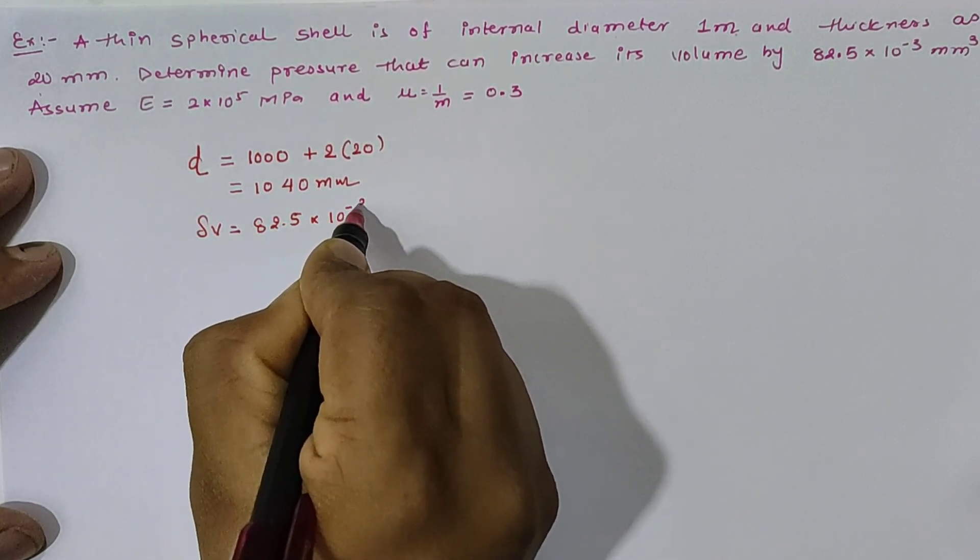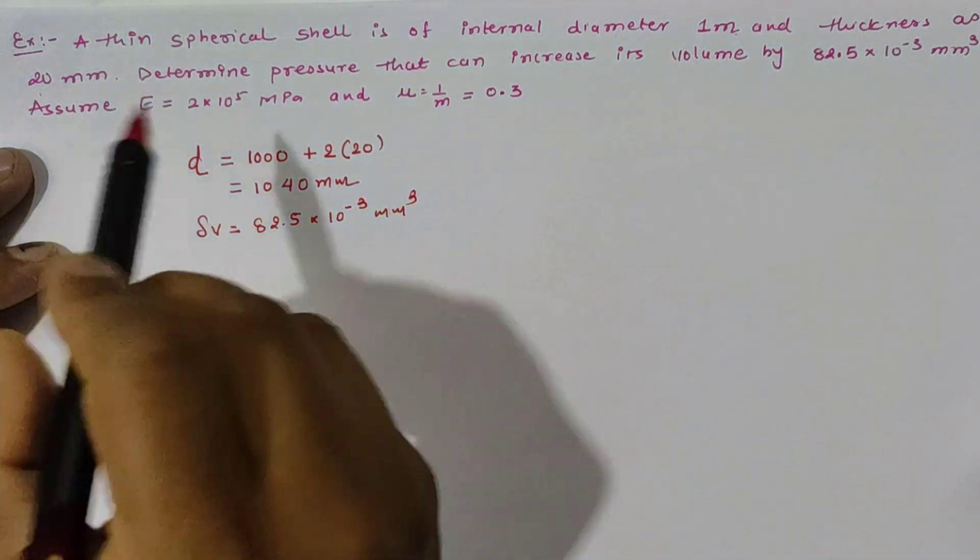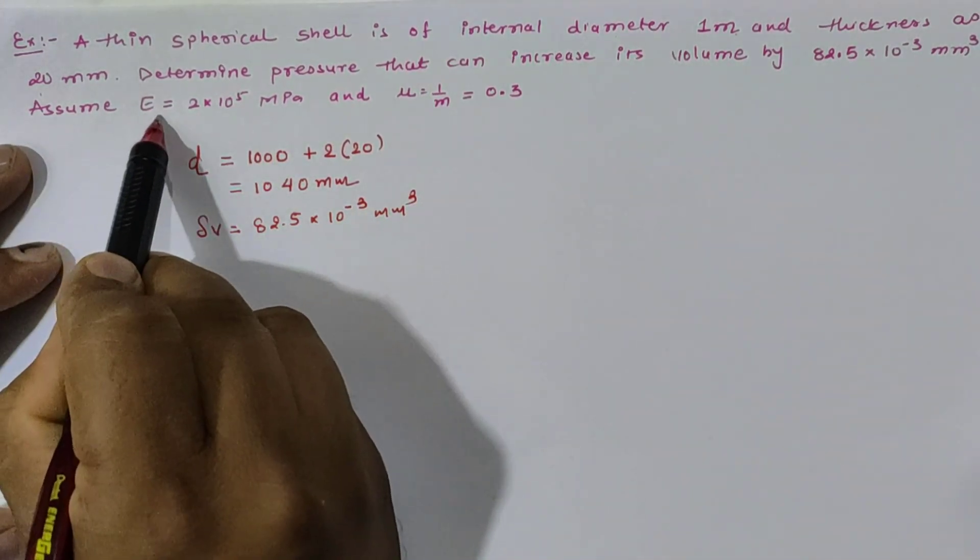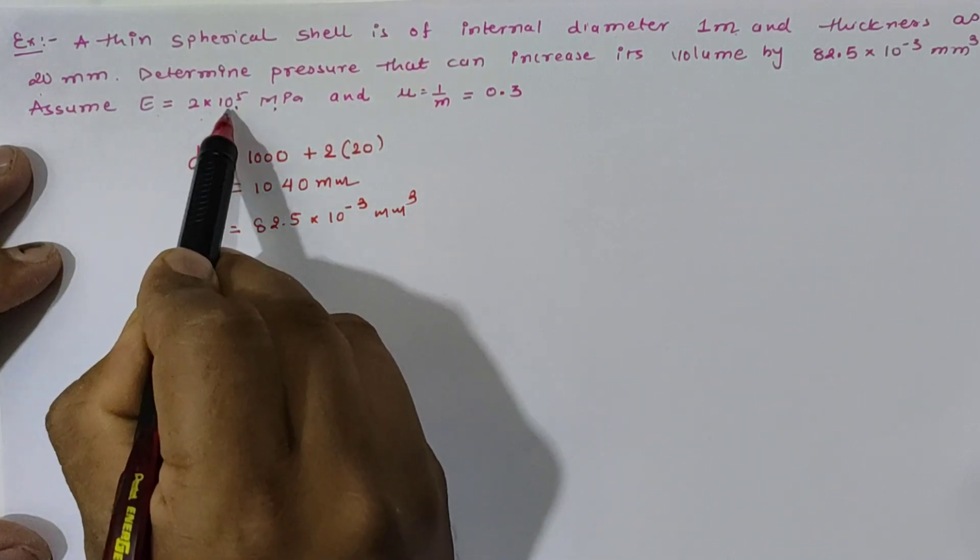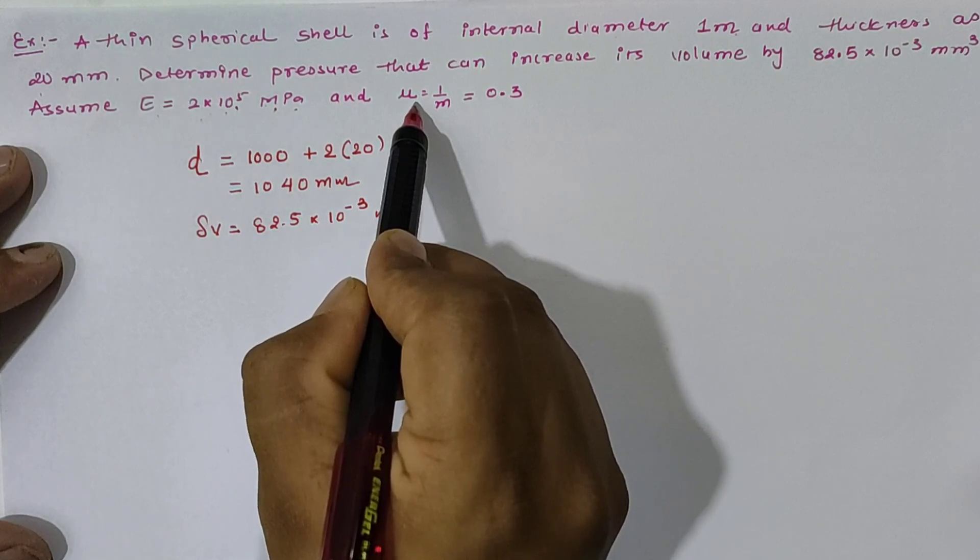Now we have to assume capital E as 2 × 10^5 MPa, it means 2 × 10^5 N/mm², and μ as Poisson's ratio or 1/m as 0.3, and we have to calculate pressure.